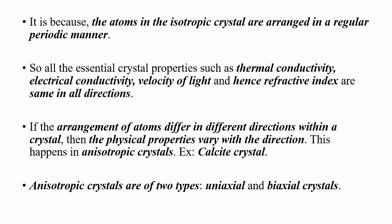In anisotropic materials, the properties are different in different directions because of the irregular arrangement of atoms. The arrangement of atoms is non-uniform, different in different directions. In isotropic crystals, a well-defined pattern in the arrangement of atoms exists, so their properties are uniform in all directions. The main thing we are concerned with is that for anisotropic crystals, the refractive index is different in different directions.